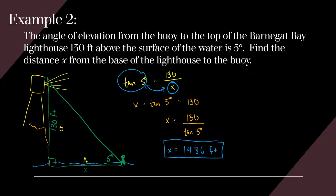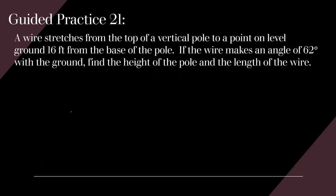Now I want you to try one on your own. A wire stretches from the top of a vertical pole to a point on level ground 16 feet from the base of the pole. If the wire makes an angle of 62 degrees with the ground, find the height of the pole and the length of the wire. Pause the video and try this. There are two parts — the height of the pole and the length of the wire. Create your own diagram, use what you need to solve for both lengths, then hit play to check your work.